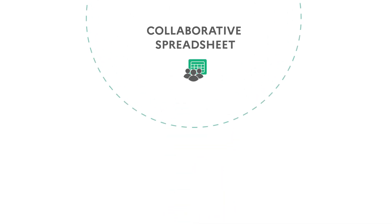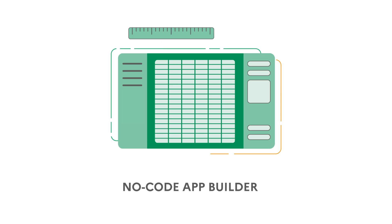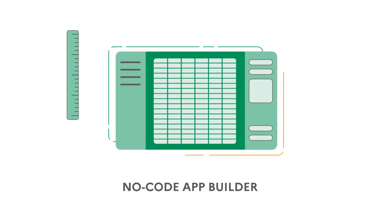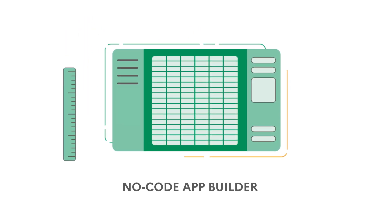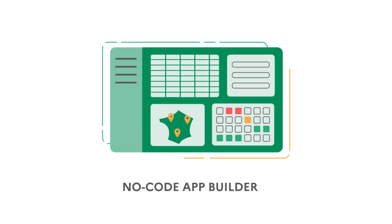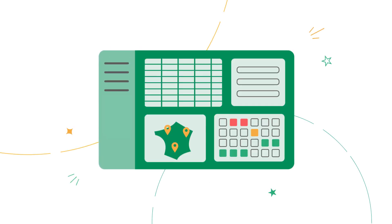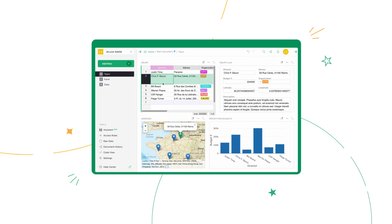But the cherry on top is that Grist is more than just a collaborative spreadsheet. It also allows you to easily create a custom workflow that fits your needs and your data. For example, you can show data as a table, a map, a card, a calendar, and even create forms to collect data. No more jumping between 10 different spreadsheets to compare data.